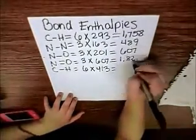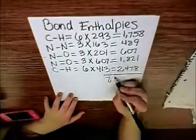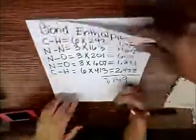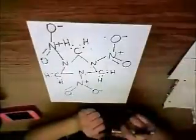And all those enthalpies are in kilojoules per mole. The bonds stored in total in one mole of RDX is 7,149 kilojoules per mole. All those bonds up there.